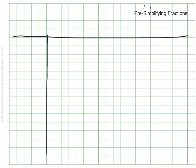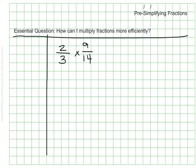The essential question for this video will be how can I multiply fractions more efficiently? When I multiply fractions I use the algorithm method. That means if I want to find two-thirds of nine-fourteenths I would multiply the numerators and then multiply the denominators.